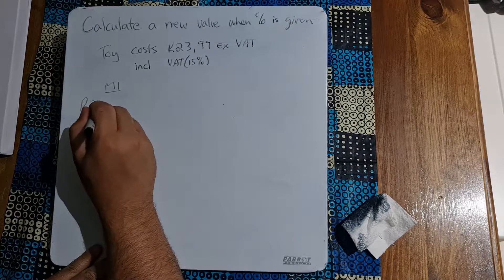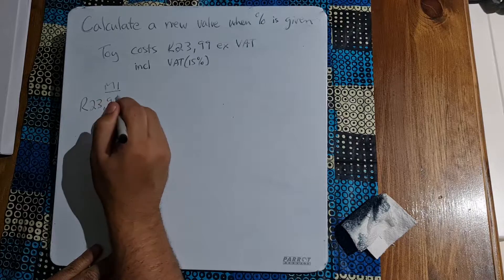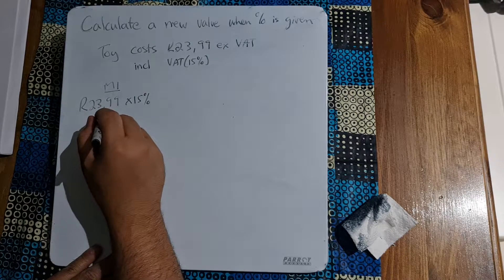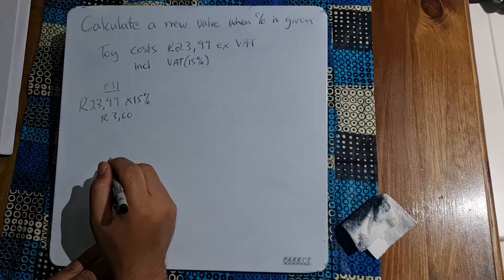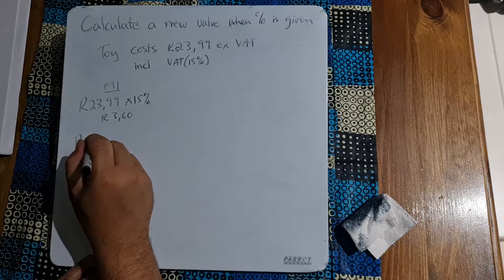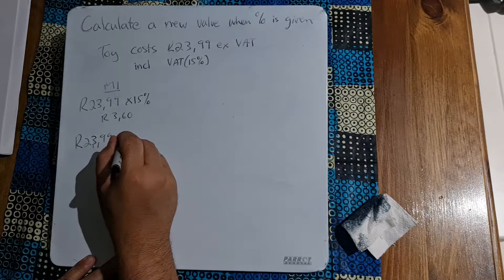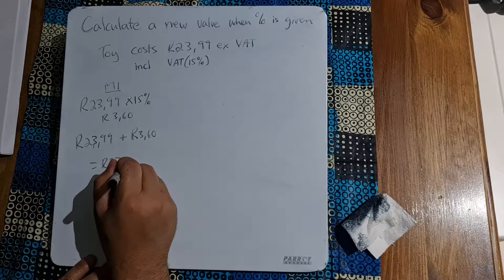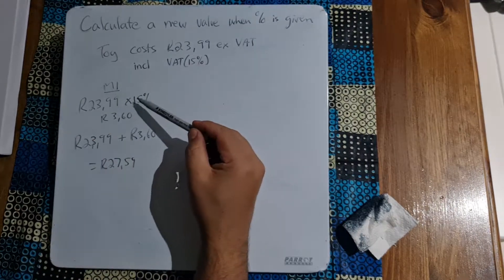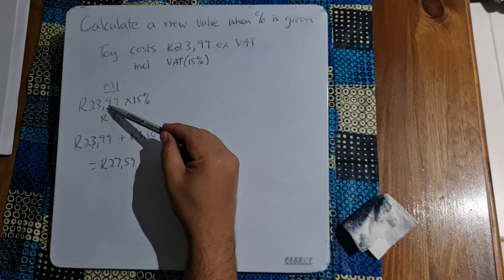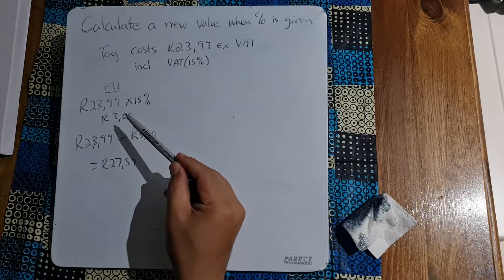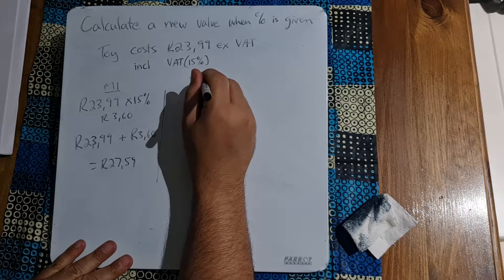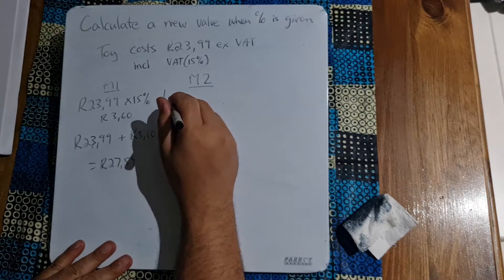Method number one: let's say a toy costs R23.99 excluding VAT and we need to calculate the cost including 15% VAT. I take 23.99 and multiply it by 15%, which gives me R3.60. I then take 23.99 and add it to the 3.60, giving me a total of R27.59. So I got the 15% amount and added it to the original amount.